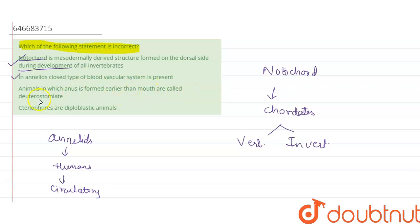Now animals in which the anus is formed earlier than the mouth is called deuterostomium. Yes, we can call it as deuterostomes also. Deuterostomes basically in these the excretion part or anus specifically this forms first. Yes, this is also correct.